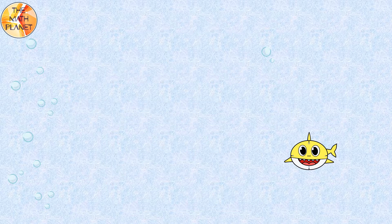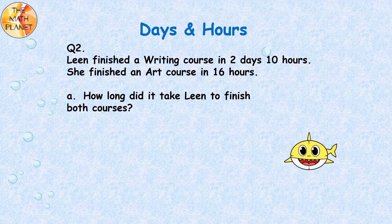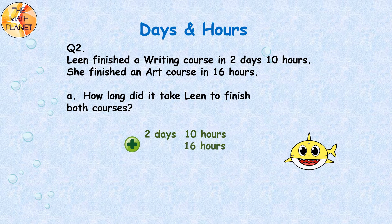Our second word problem involves days and hours. Lynne finished a writing course in 2 days 10 hours. She finished an art course in 16 hours. How long did it take Lynne to finish both courses? We will add the times for both courses, so our equation will be 2 days 10 hours plus 16 hours.